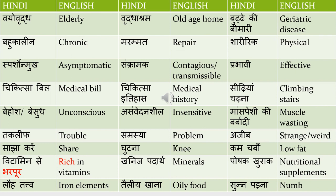Taliya khana means oily food — for example, 'Bharatiya khana bahut taliya hota hai' means 'Indian food is very oily.' Sun padna means to become numb — sun means numb.